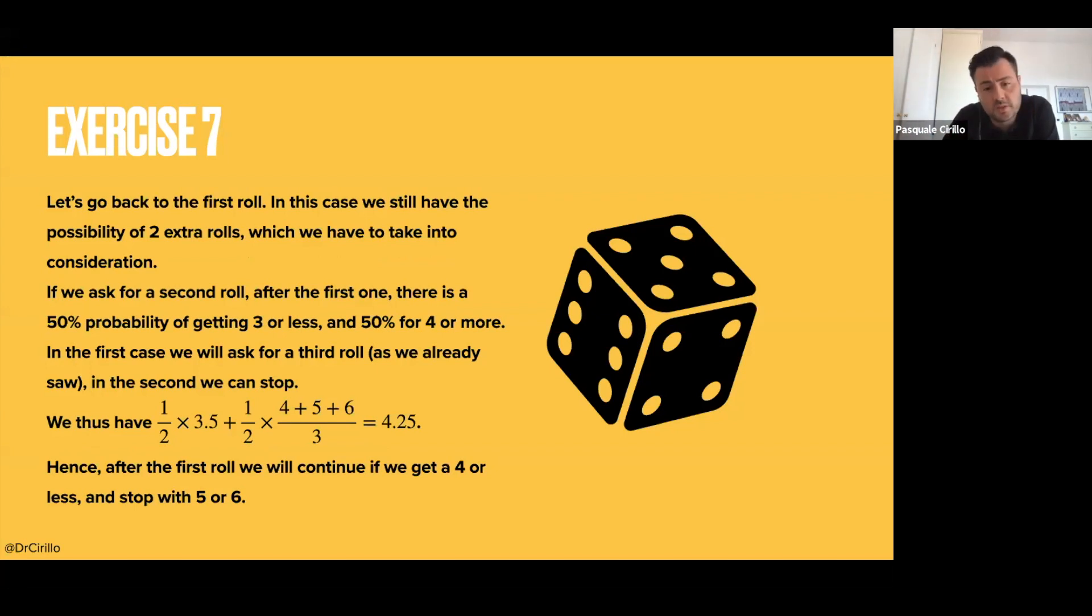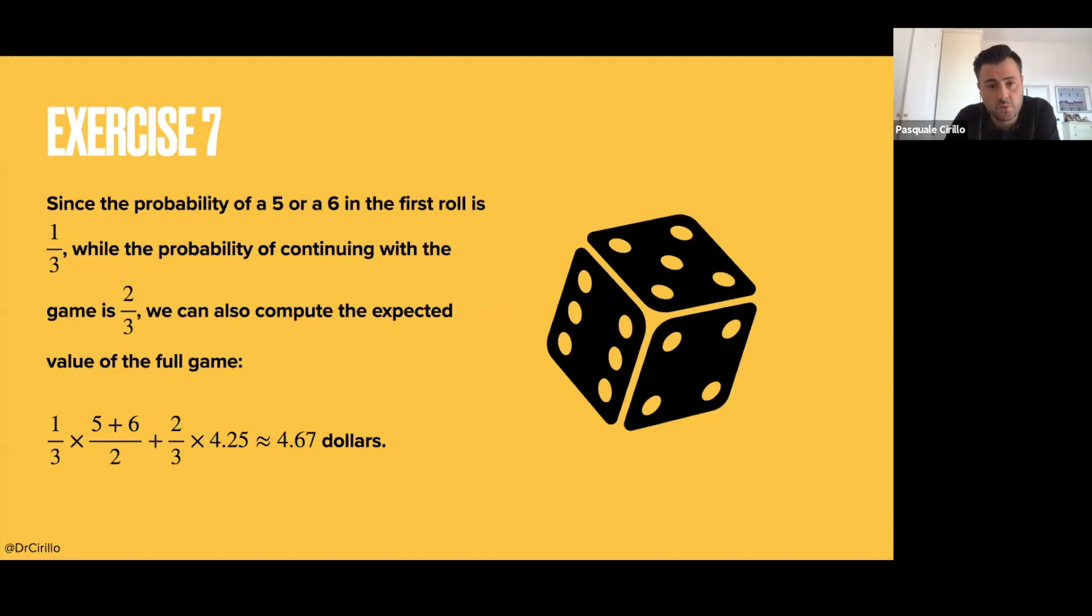After the first toss, I will continue unless I get a 5 or a 6. And in the second toss, I will continue unless I get a 4 or more. If I want to know the final expected return, this is exactly the one I have computed.